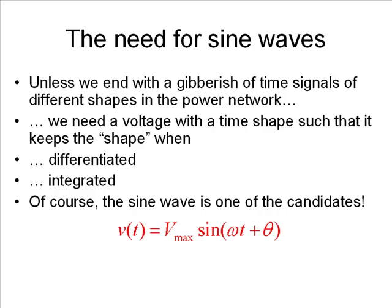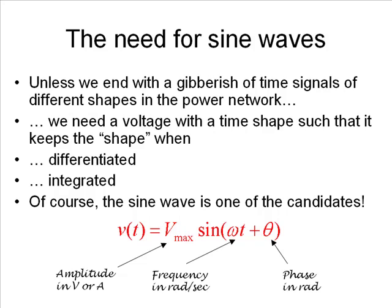So, we take a voltage like this with a maximum or peak value of Vmax, amplitude in volts or amps if that were a current, of course. We have the angular frequency ω in radians per second and the phase shift θ in radians. In radians only, or the equation doesn't make sense.